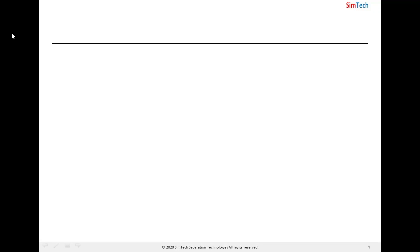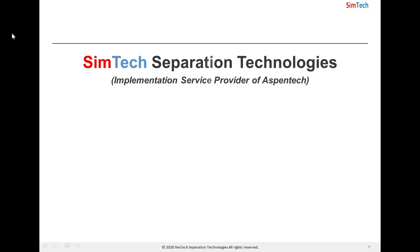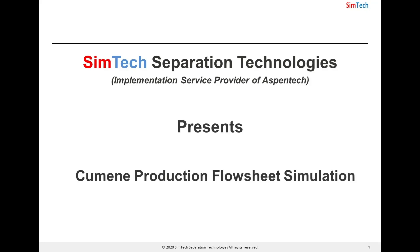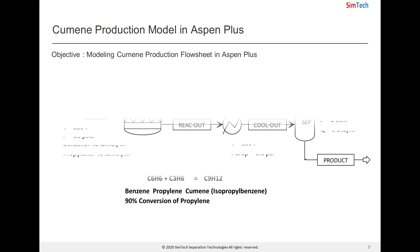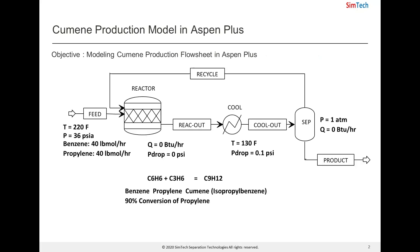Welcome back. We are now presenting one more simulation problem on modeling of cumene production flowsheet with Aspen+. The objective of this simulation problem is to model the cumene production flowsheet in Aspen+, and we are going to simulate this flowsheet with recycle.